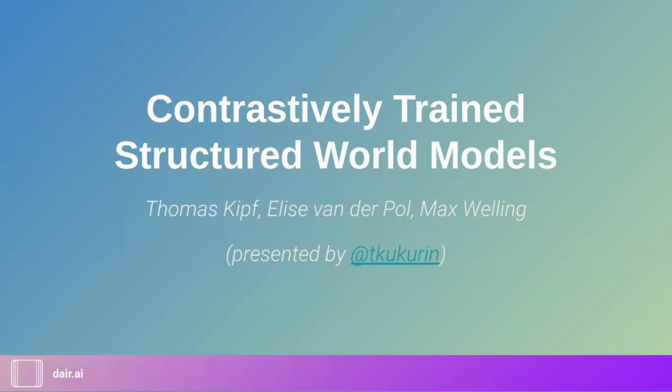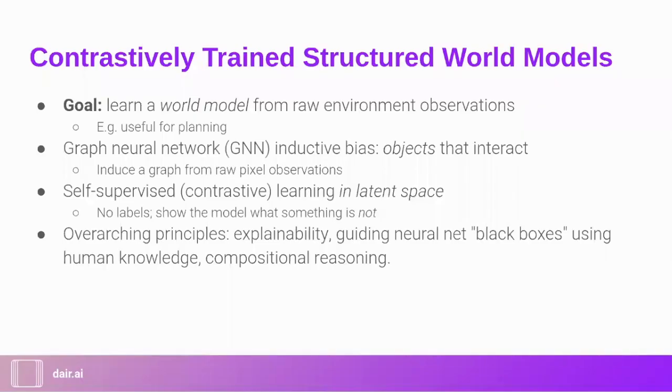So yeah, I just wanted to present this paper by some people from the University of Amsterdam called Contrastively Trained Structured World Models. And this paper I find interesting because it's about world modeling, which is quite an interesting topic for me. To introduce the paper, to learn a world model is to kind of reduce the dimensionality of some environment. And this thing might be useful, for instance, in planning for reinforcement learning when you are trying to make an agent behave some way in some environment. And another thing that I think makes the paper useful is the graph neural network approach, which they try.